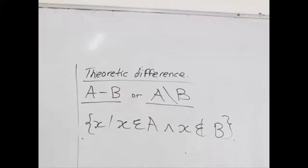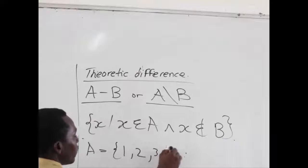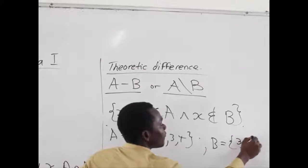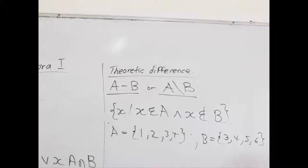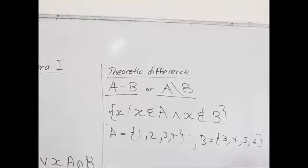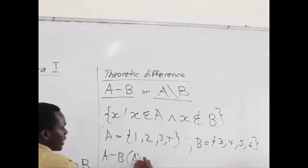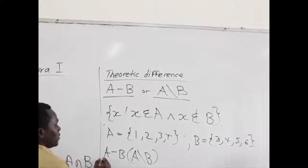That's what it means. So, let's take an example to clarify that. Assuming we have set A to be the set of 1, 2, 3 and 4, and set B has the elements 3, 4, 5 and 6. Now, we want to find the Theoretic Difference here. That is A minus B, or we can write it as A backslash B. Any one of them you want to use is accepted.